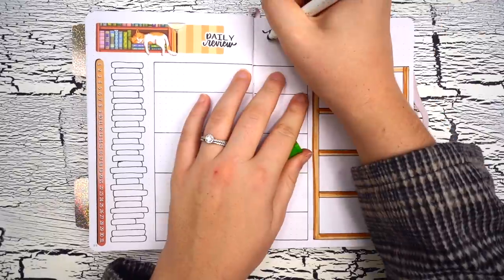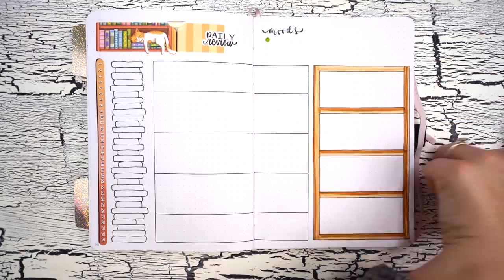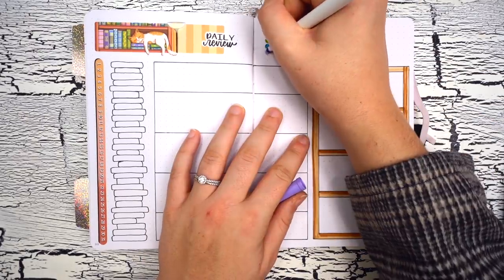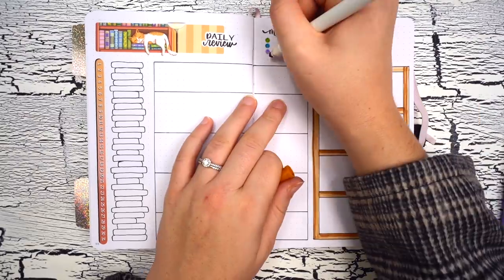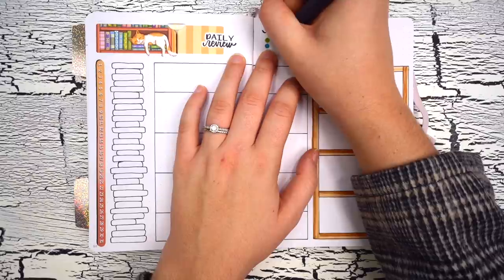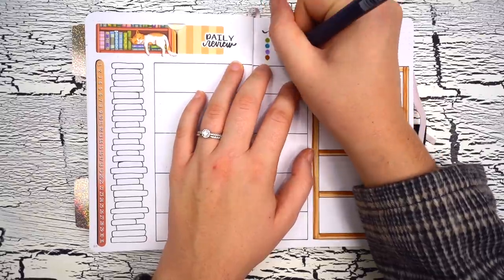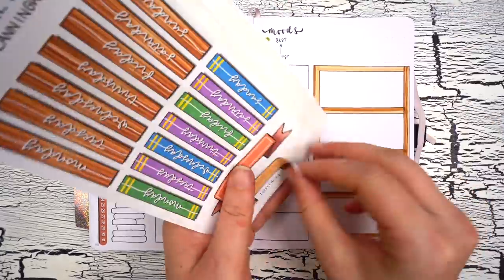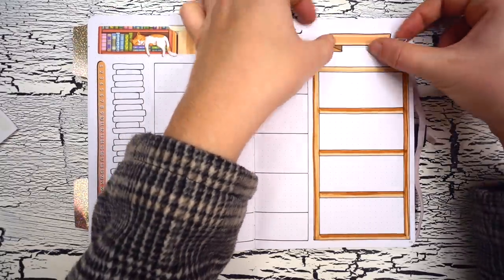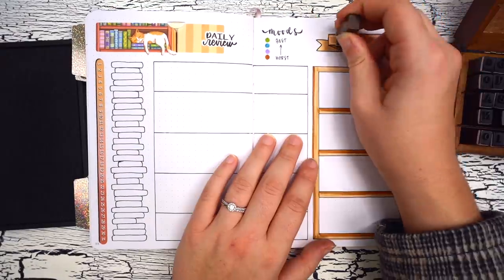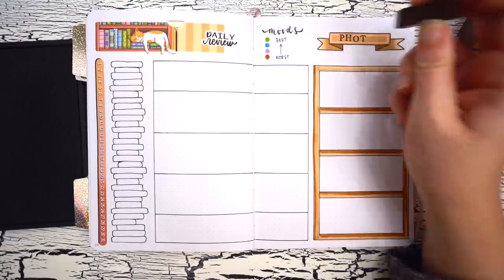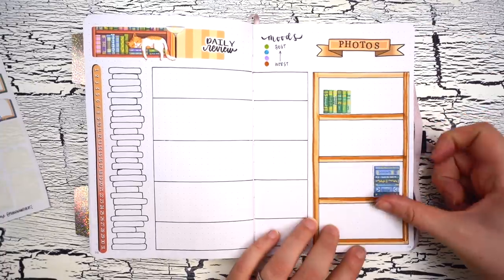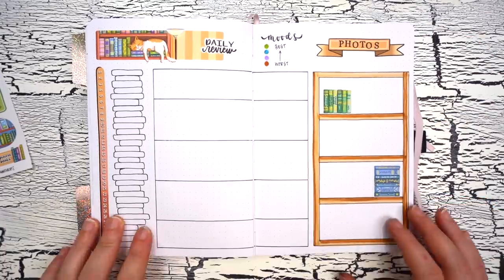The third and final component of this spread is going to be a photo wall, or in this case it's going to be a photo bookshelf that you can see on the right, which is just going to be a spot for me to paste in five or six photos at the end of the month highlighting some key memories. I've been doing a lot more photo memory keeping in my journals this year and I've really been loving it, so I'm excited to scroll through my photos at the end of December to fill in this little photo shelf here. And those three components are all done, so that's it for my daily review and on to the next spread in my December setup.